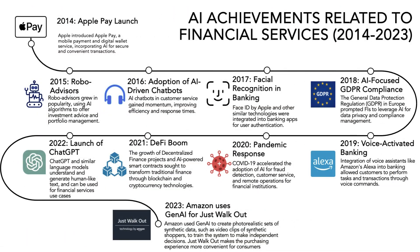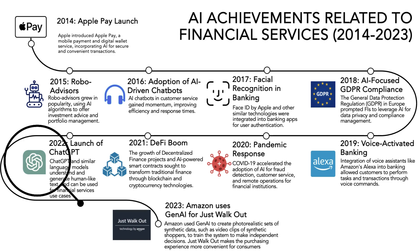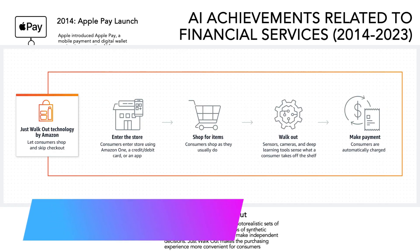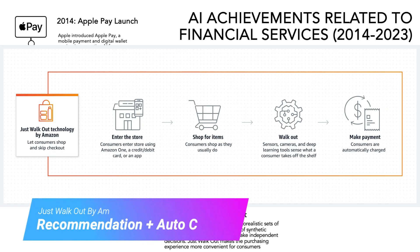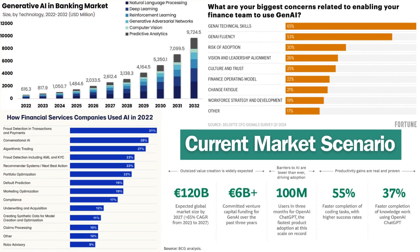If you look at this roadmap, the use of AI in financial services started a long time ago. We can see AI use cases for security in Apple Pay, then it advanced into chatbots and facial recognition systems at banks, then the ChatGPT launch, and now the Amazon 'Just Walk Out' use case — where a customer touches something in a store and it gets automatically added to a virtual card shown as a recommendation in the future.